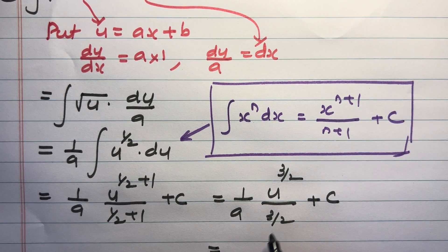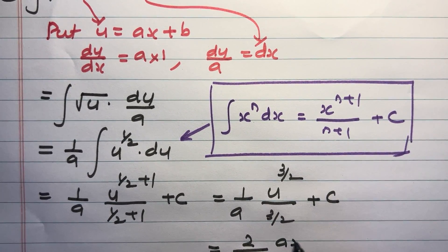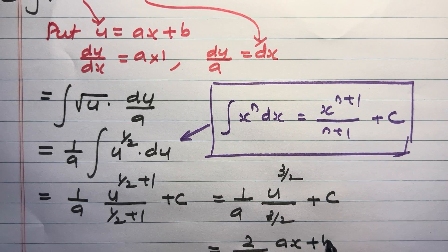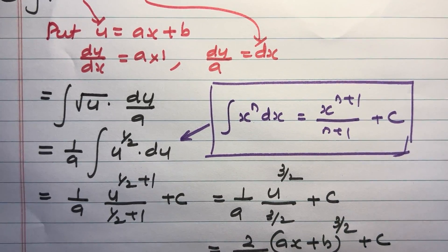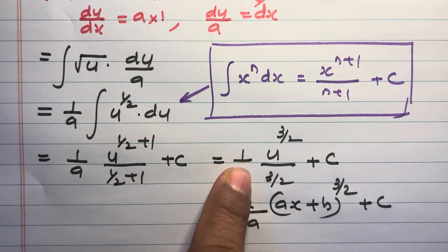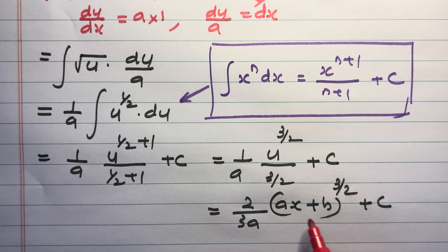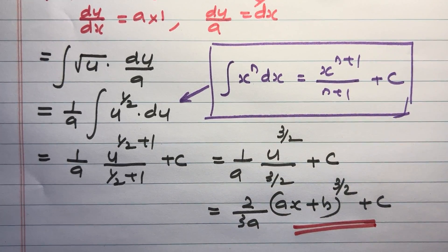Take the reciprocal and multiply: 2 by 3a. Substituting back, the value of u is ax plus b. So the final answer is 2 divided by 3a, into ax plus b all raised to 3 by 2, plus c.